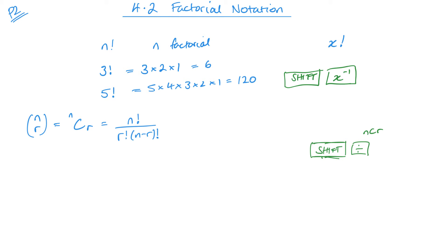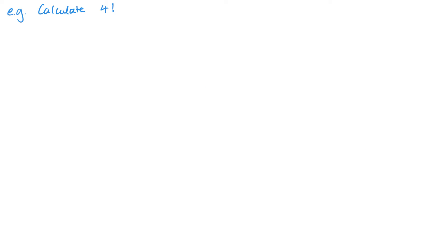So here we have it — let's look at a few examples that build it up using everything within here. First example: 4 factorial just means 4 times 3 times 2 times 1, and then you just work this out. You can use the button in your calculator, or you can do it manually: 4 times 3 is 12, multiplied by 2 is 24. As the number gets bigger, it's much easier to use the calculator button.